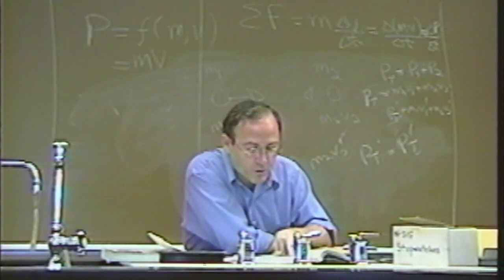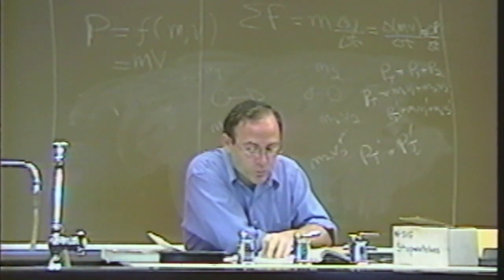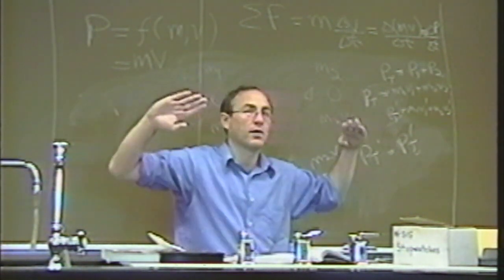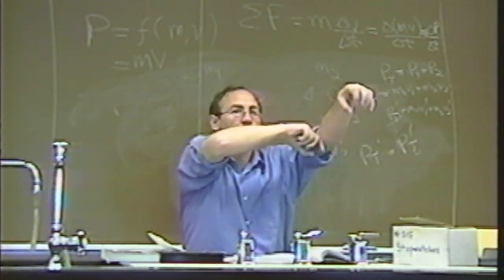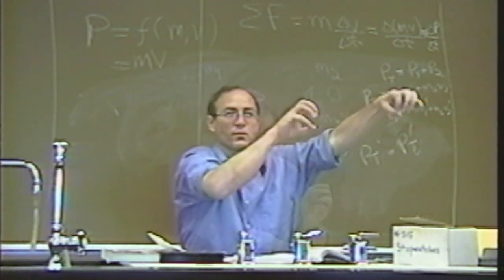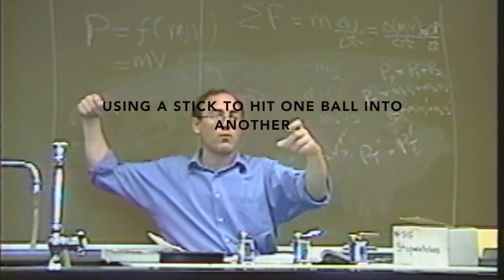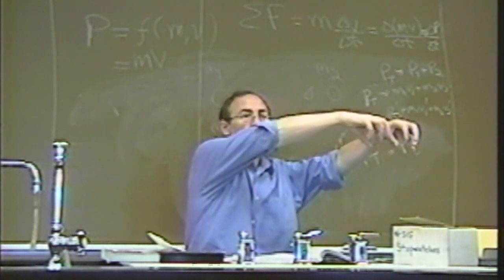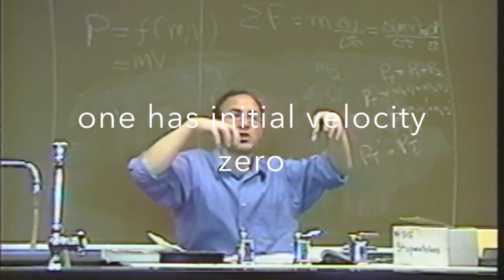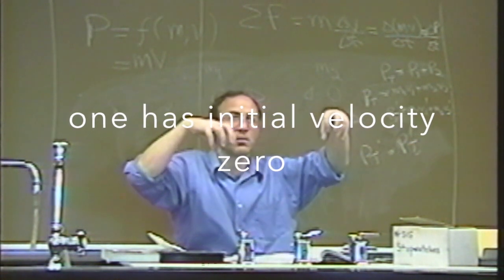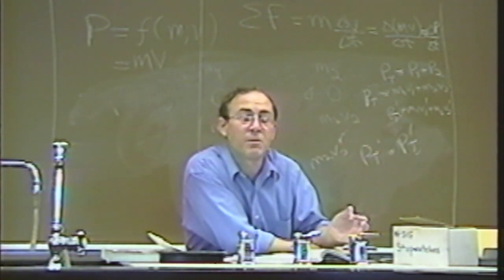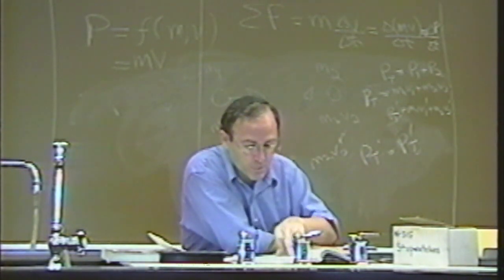Example: a billiard ball of mass m moving with speed v flies head-on. What are the speeds of the two balls after the collision? We assume it's not hitting at an angle - you're hitting it straight on. In billiards, one ball is stationary and is being hit by the other. One has an initial velocity of zero, one has a known initial velocity, and we want to find the final velocities.